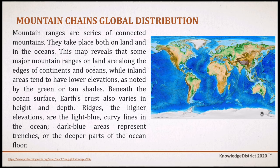Mountain ranges are also not randomly distributed — they exist where plates collide or along volcanic fault lines. These mountain ranges are a series of connected mountains that occur both inland and in the oceans. Some major mountain ranges on land are along the edges of continents, while inland areas tend to have lower elevations. Beneath the ocean surface, Earth's crust also varies in height and depth: ridges are the higher elevations shown as curvy lines in the ocean, while dark blue areas represent trenches, the deeper parts of the ocean floor.